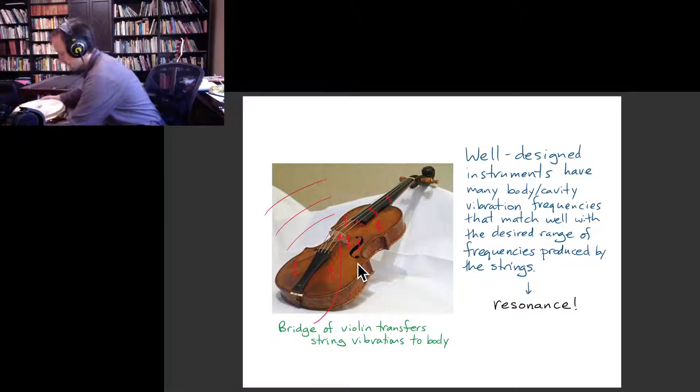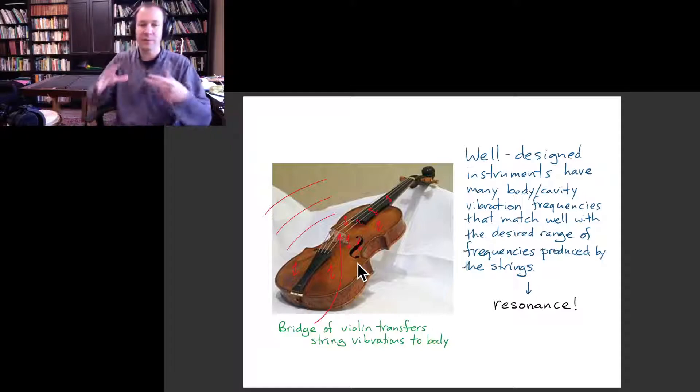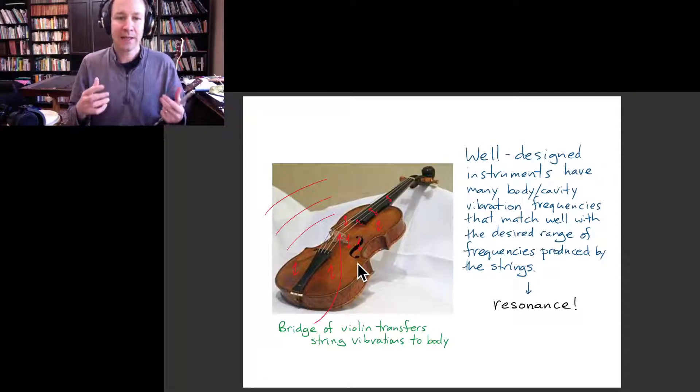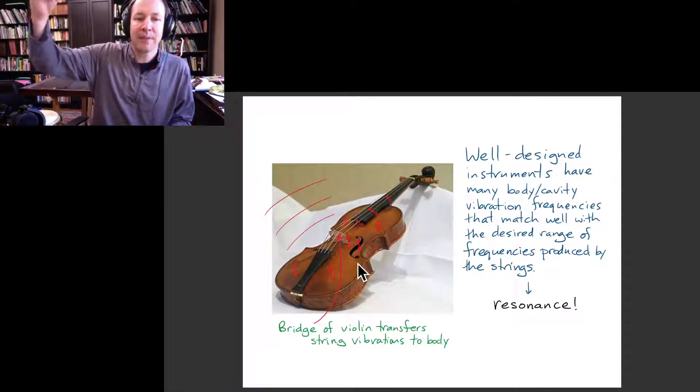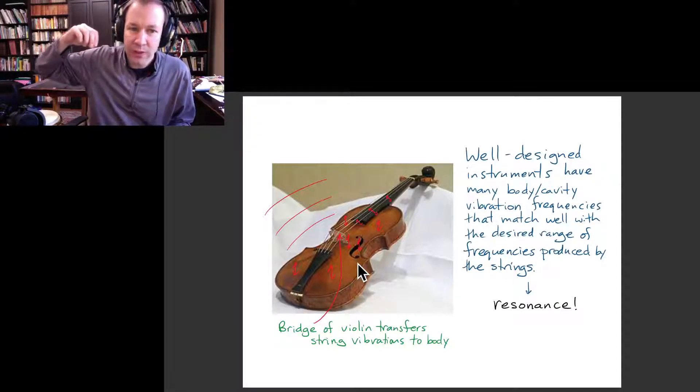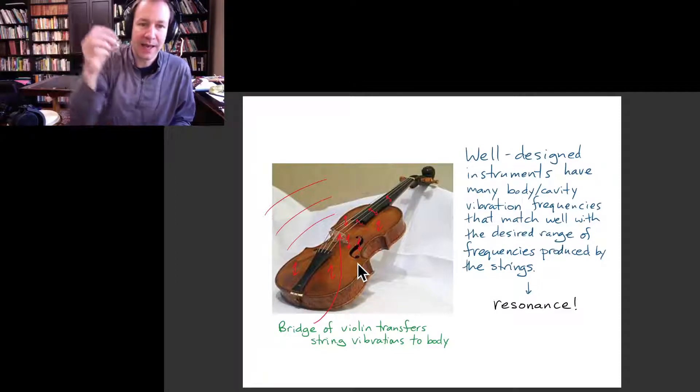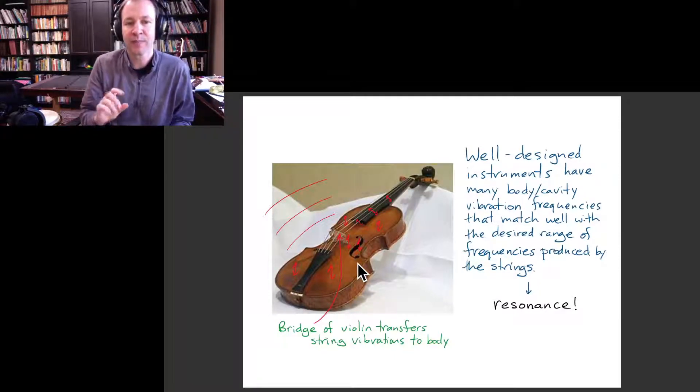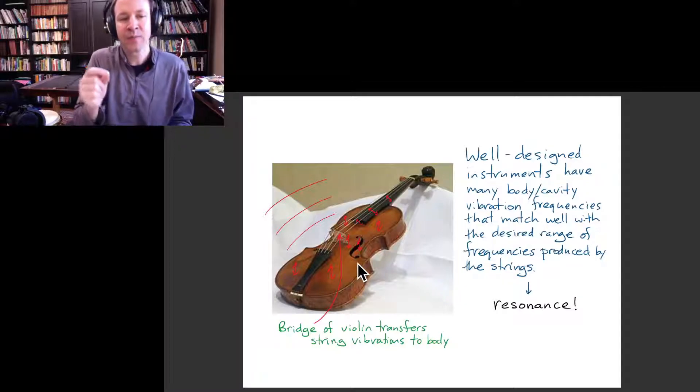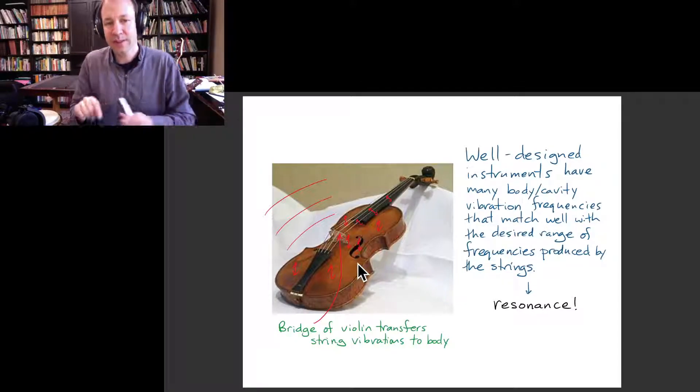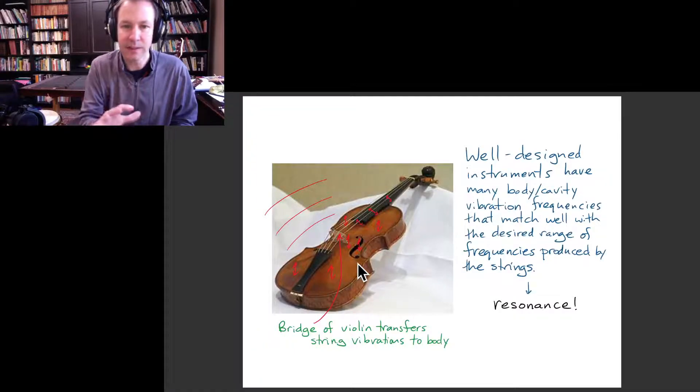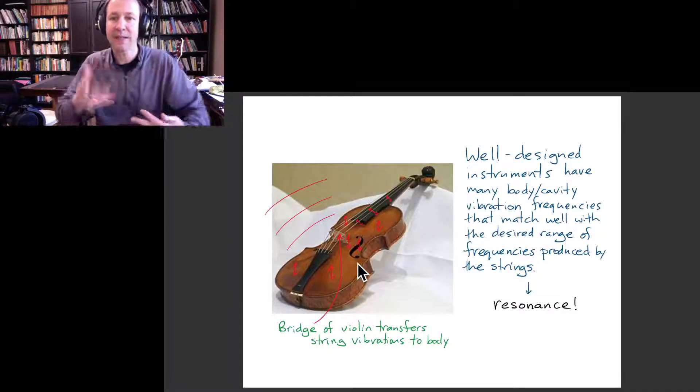And generally, because those are more complicated two dimensional objects, they can vibrate in lots of ways. And so what can happen then is that when the string starts vibrating, and then that causes the bridge of the violin to vibrate, then it's likely that that vibration frequency will be close to one of the natural frequencies of the instrument. And then you would get a resonance phenomenon.